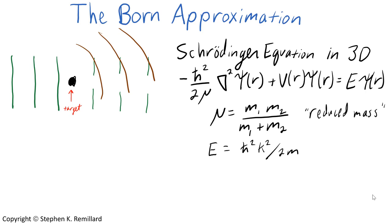The other terms are the same as you normally see in a Schrödinger equation. Mu is the reduced mass. In the event that the incident wave represents a particle of mass m1 and the target represents a particle of mass m2, then the reduced mass is given by a simple expression. Energy is h-bar squared k squared over 2m, where k is the wave number.